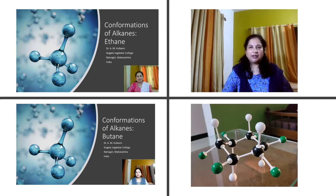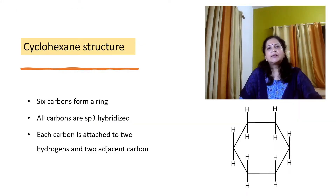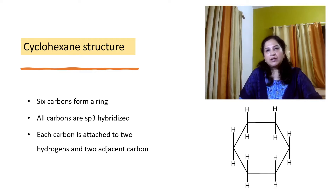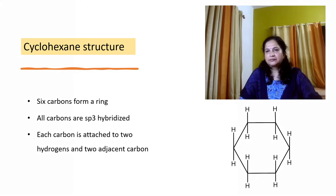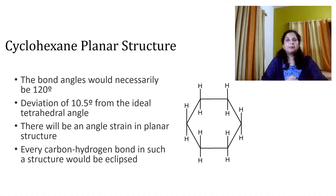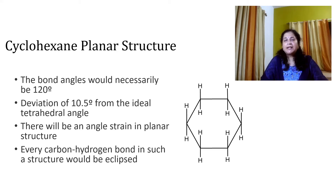Cyclohexane, C6H12, is a molecule in which six carbons have formed a ring. All carbons are sp3 hybridized and each carbon is attached to two hydrogens and two adjacent carbons. If we consider the planar structure of cyclohexane, the carbon-carbon bond angle should be 120 degrees, whereas the normal sp3 bond angle is 109 degrees.